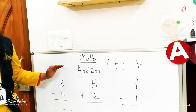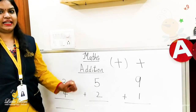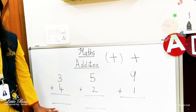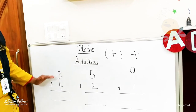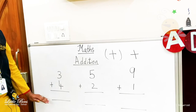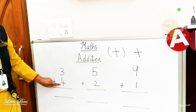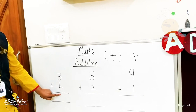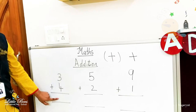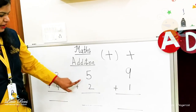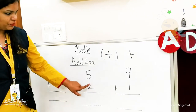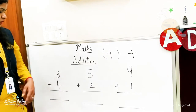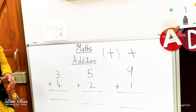Now we will learn addition by drawing lines. This is the addition format: three plus four — we write the answer in the blank space. We also have five plus two and nine plus one. We will draw lines and find the answers.